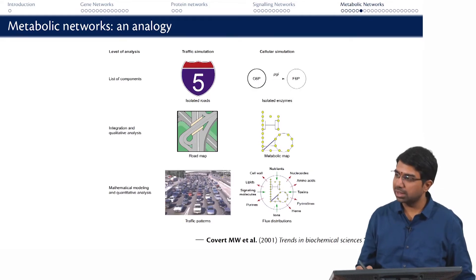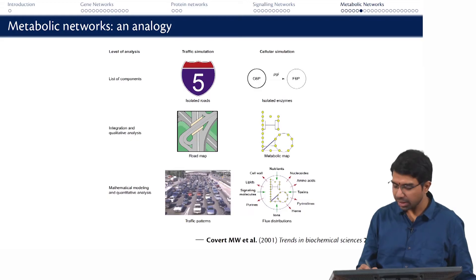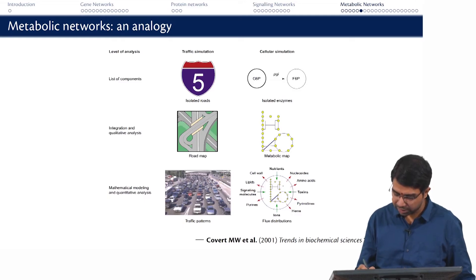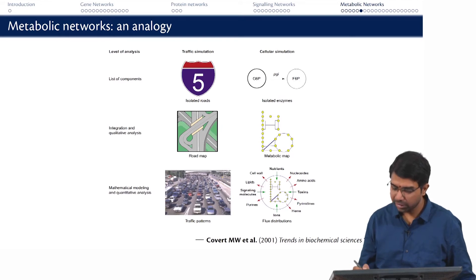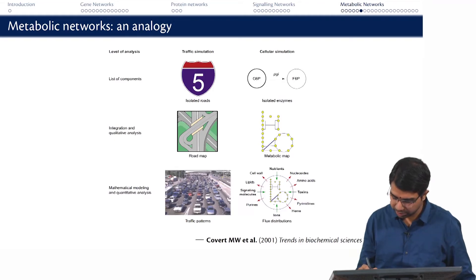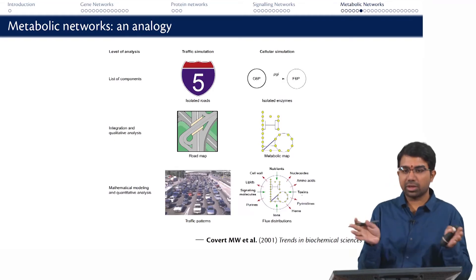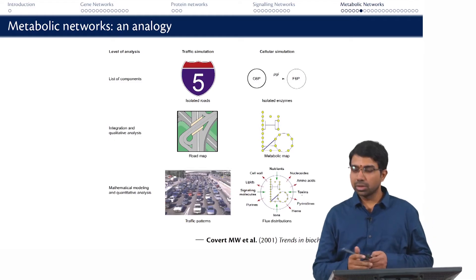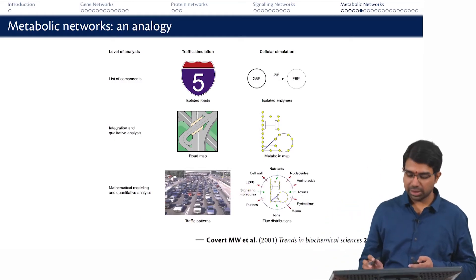Metabolic networks are normally studied trying to understand: can I produce X from Y? More importantly, if I have this network, how much traffic is flowing towards this metabolite of interest? How many branches are there, and where does my traffic flux get split? This becomes very important — how do we study this?